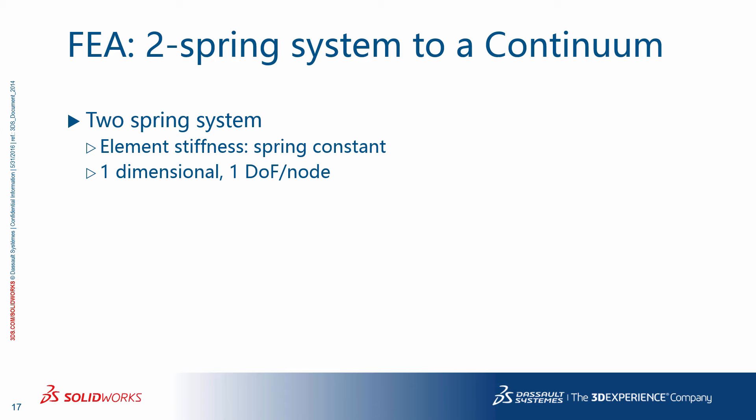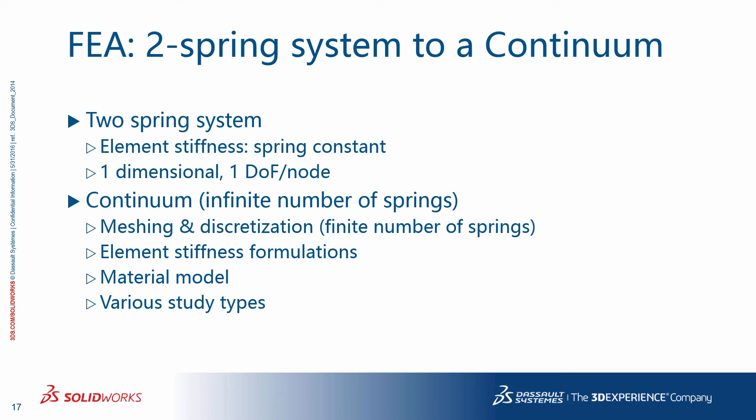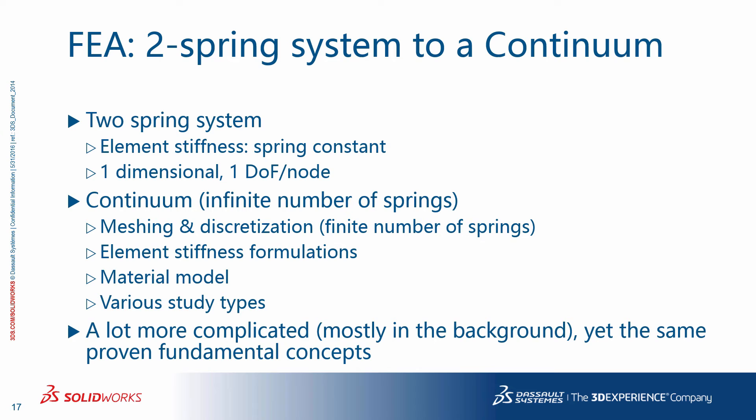We discussed the underlying concept behind the finite element method using the simplest case of a two-spring system. The element stiffness was the one value of spring constant. It was one-dimensional and one degree of freedom per node. You can think of a continuum as an infinite number of springs. FEA reduces these infinite number of springs to a finite number of springs through the process of meshing and discretization. Element stiffness formulations behind the scenes are of course a lot more complicated. Material models need more complex parameters and various study types lead to different systems of equations. So even though things are a lot more complicated, fortunately a lot happens in the background and it's transparent to the user. But it still employs the same proven fundamental concepts. This is the beauty of the finite element method.